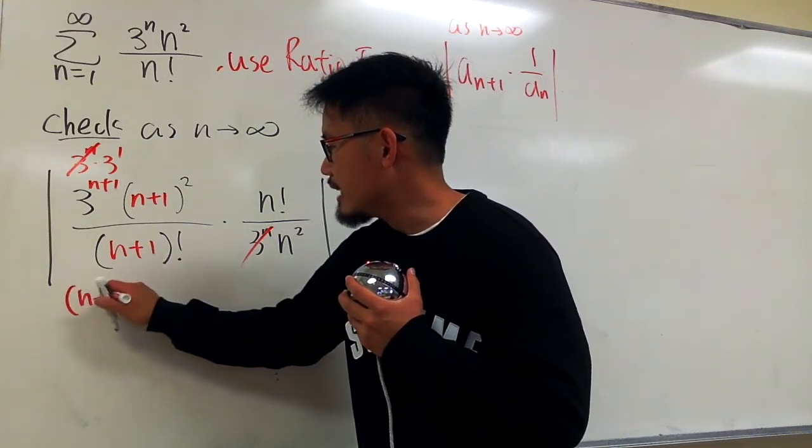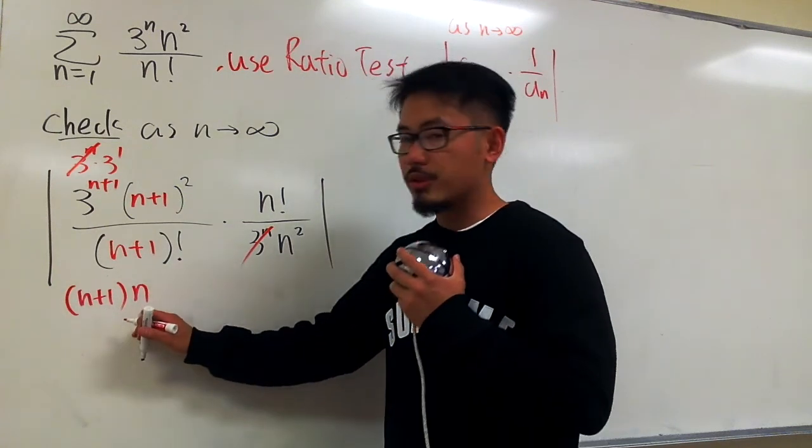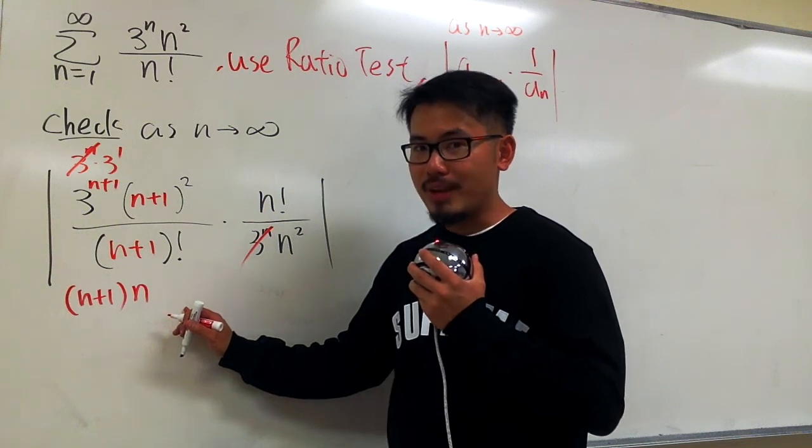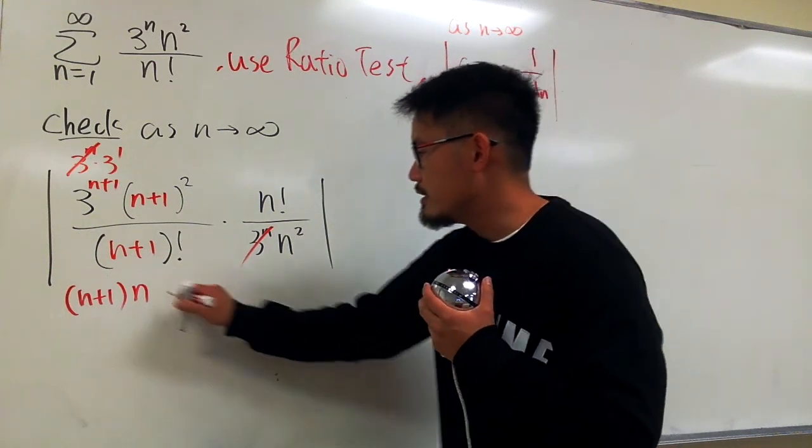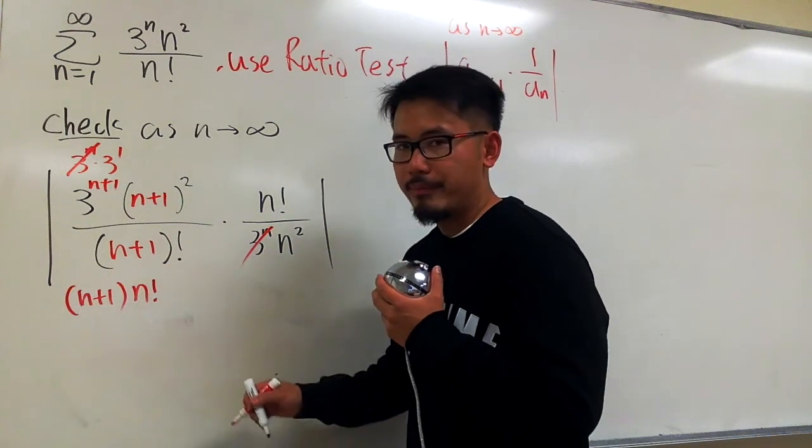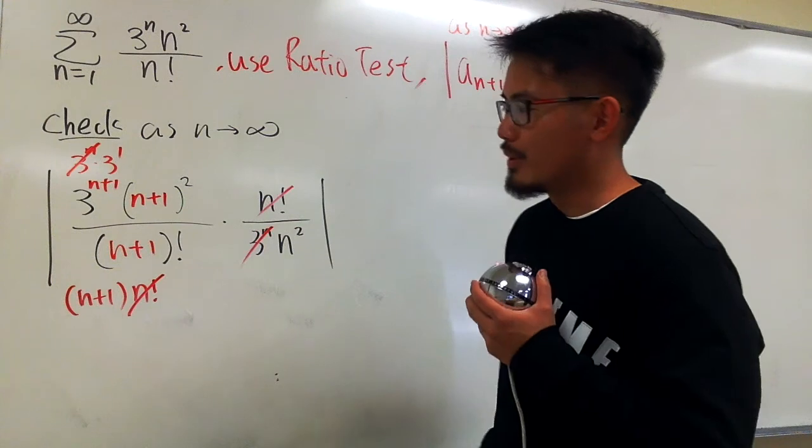You first put down the inside, which is (n+1), and then the next one is 1 less, which is just n. Then the next one is (n-1), then (n-2), and so on. But all this is just n factorial. And then this n factorial will cancel with this n factorial. That's very nice.